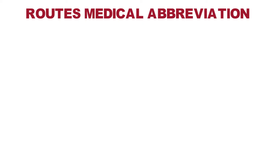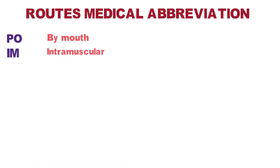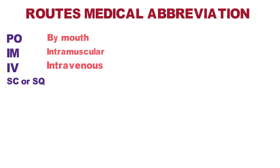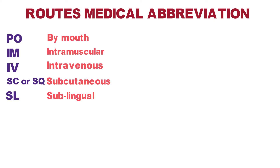The next type of medical abbreviations are routes of administration of medication. The first one is PO — that means by mouth, so pills which are given by mouth and taken orally. IM is intramuscular, like a flu shot or any injection that goes into the muscle. IV is intravenous fluid or medication that has to be given through a vein. SC or SQ, depending on where you are, means subcutaneous — an injection that goes into the fat tissue rather than the muscle, and it's one of the easier injections to give. Then SL is sublingual, meaning under the tongue — you place a small tablet underneath the tongue and it dissolves.